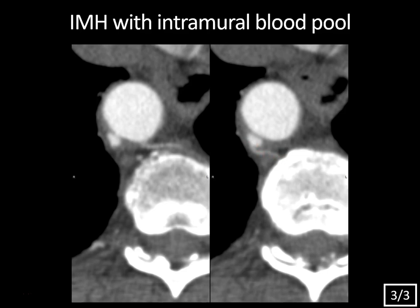Also, you don't really have a communication with the lumen. Remember, the ulcer-like projection has a wide communication with the lumen. In this case, you do see this little pinpoint tiny orifice, which you could sometimes see, but usually that won't be any wider than the actual feeding artery going to this intramural blood pool. These tend to just resolve over time, so they have no poor prognosis. It's just an incidental finding, but you don't want to confuse them with an ulcer-like projection.